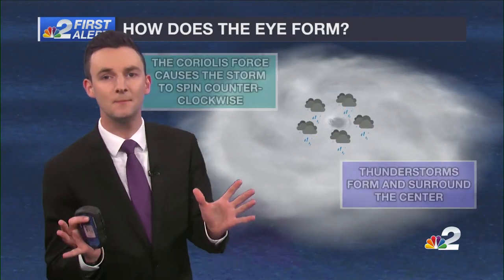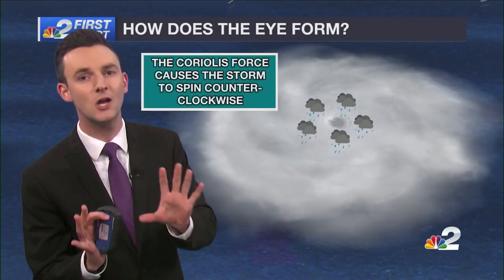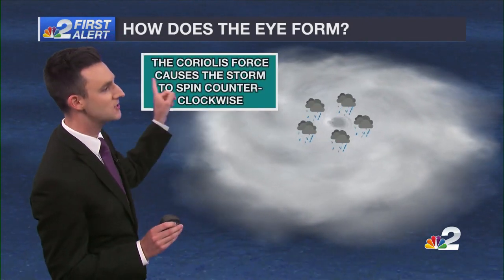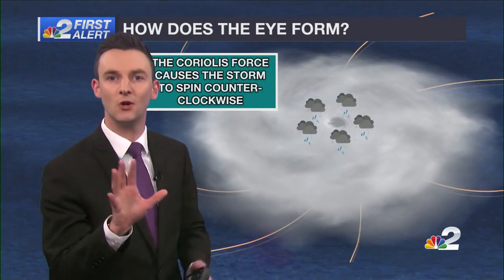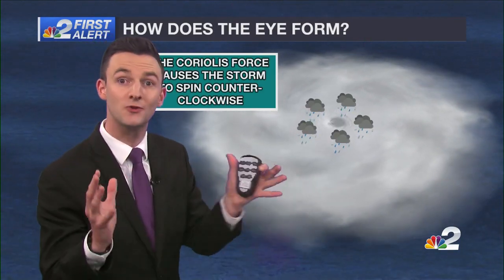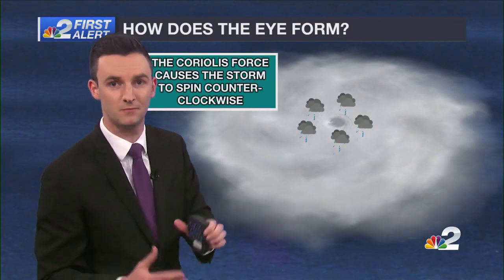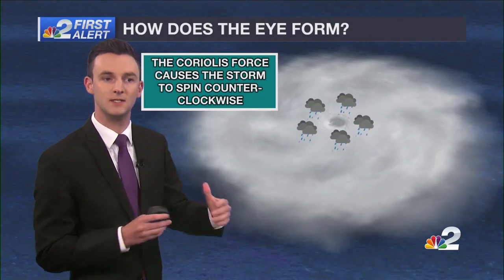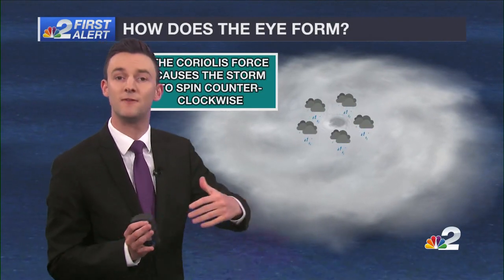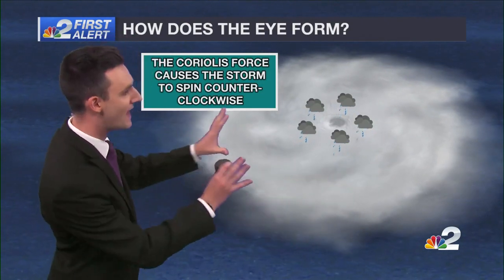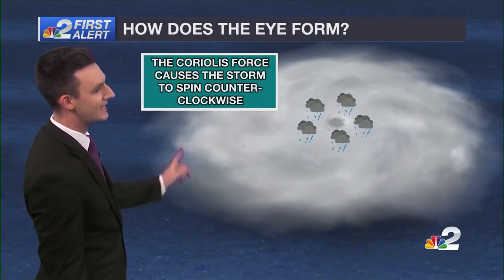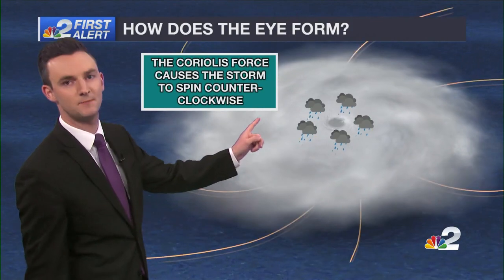Why do hurricanes spin? Very simply put, it has to do with the Coriolis force, a result of the Earth's rotation. That causes wind to be deflected to the right, and that's why we see that counterclockwise spin in the northern hemisphere.